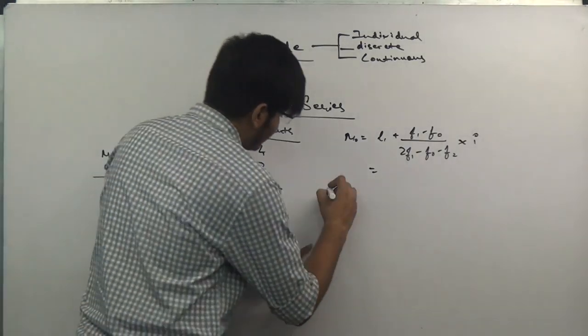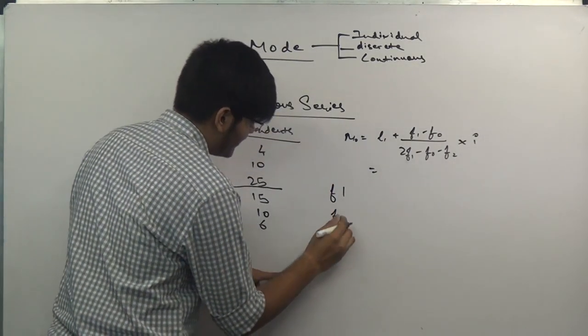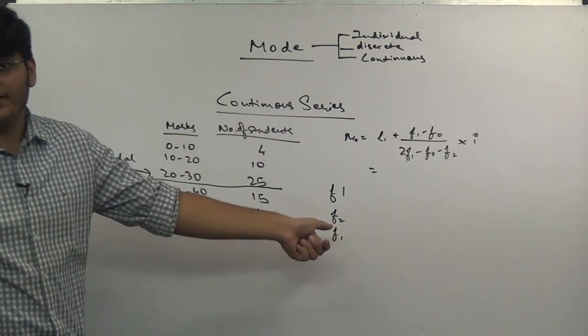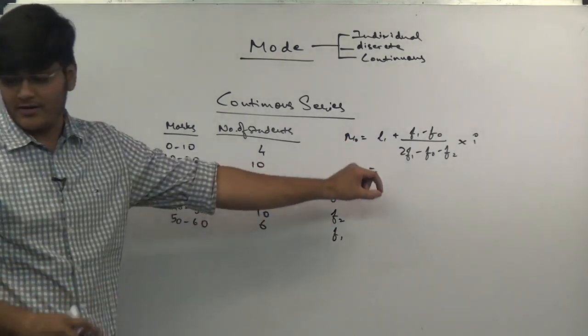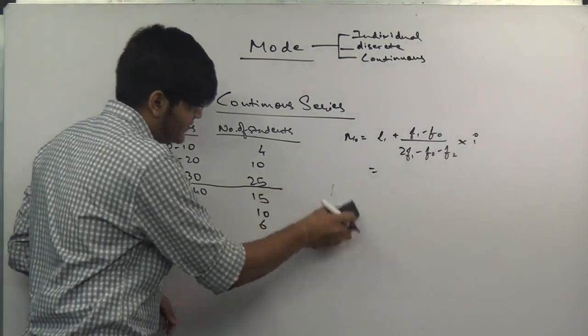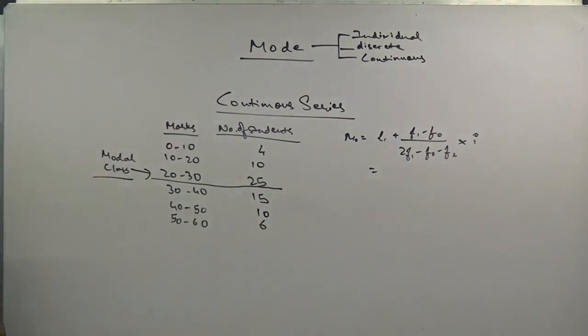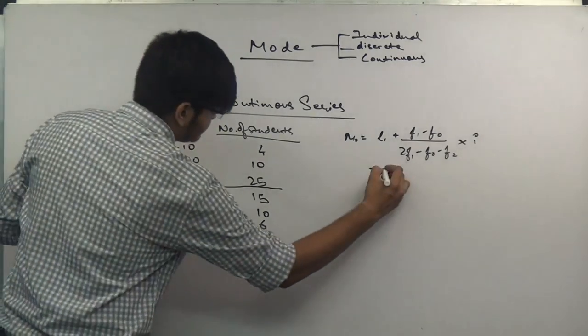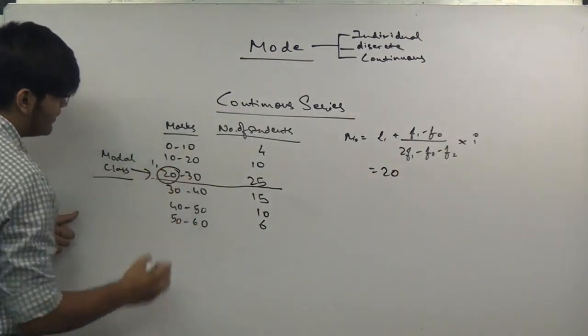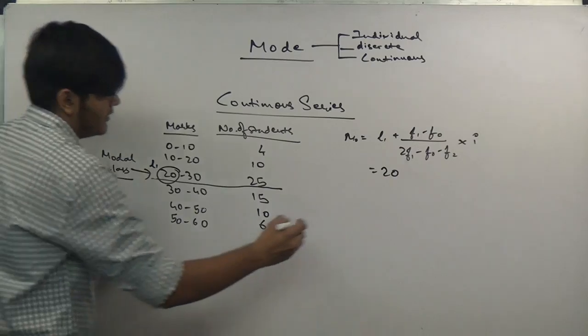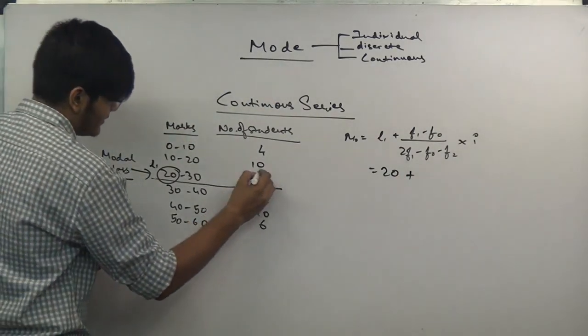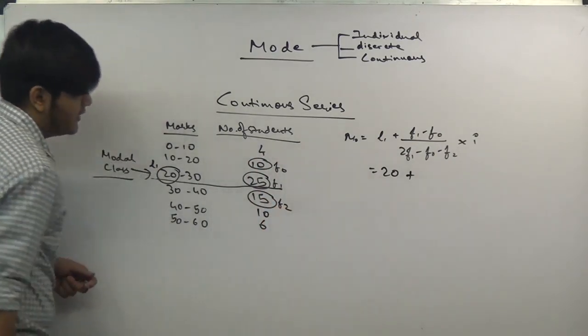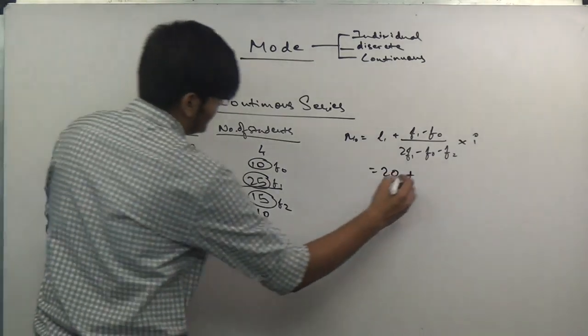There is a difference between writing F1 and f subscript 1 or f subscript 2. You have to write it as a subscript. Do not simply write just 1 ahead of it, otherwise it looks like you are multiplying something. The lower boundary is 20, this is l1.